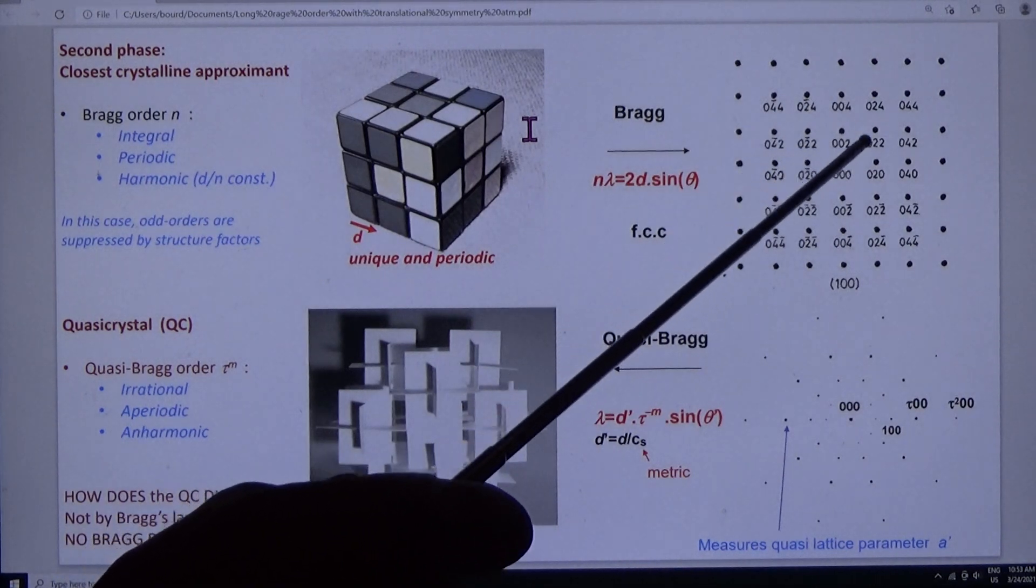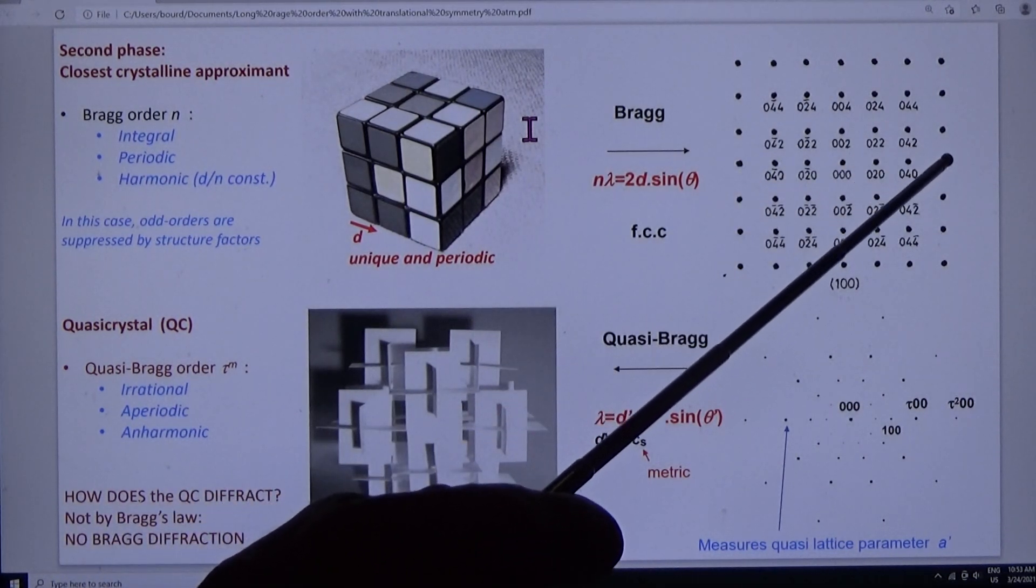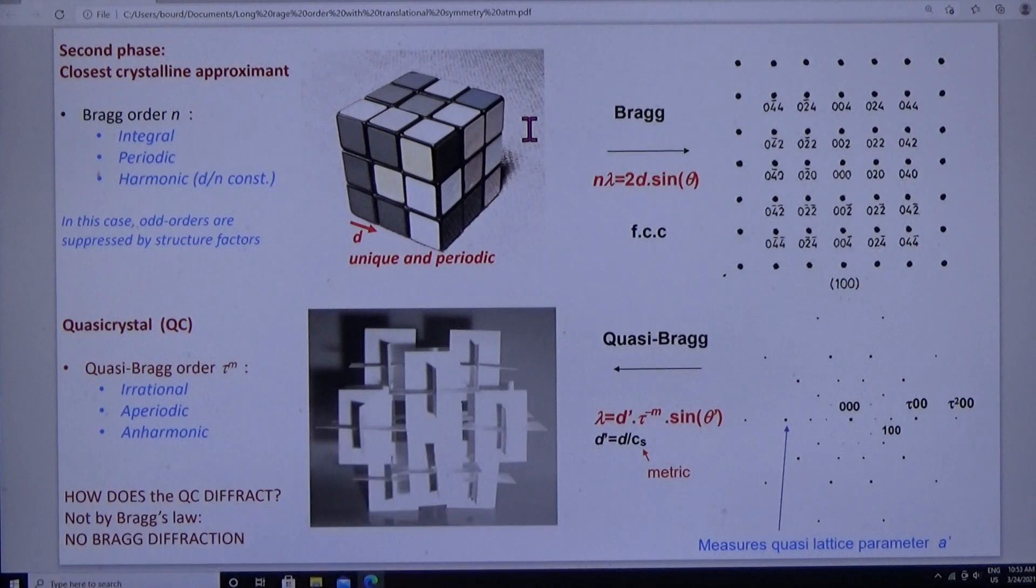Here it is: 0, 1, 2, 3, 4, 5, 6. In this instance, odd orders are suppressed by structure factors.